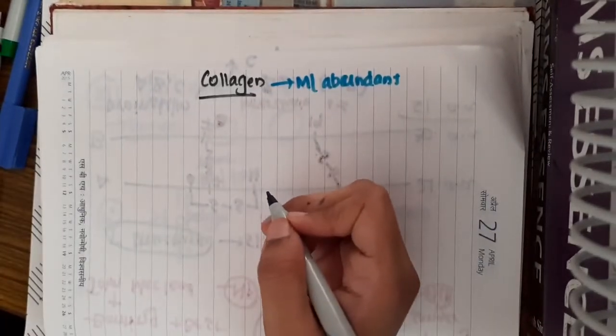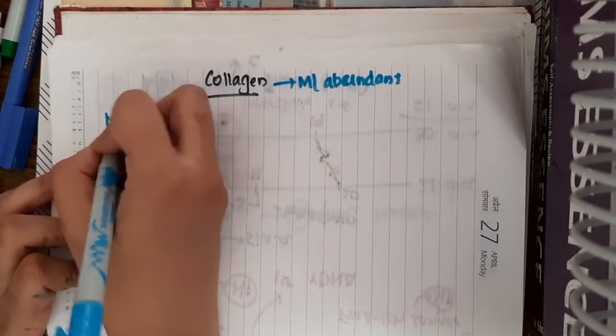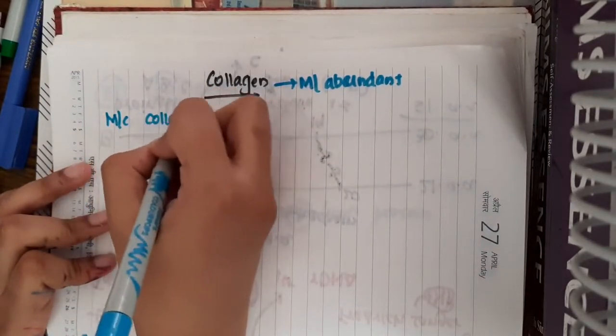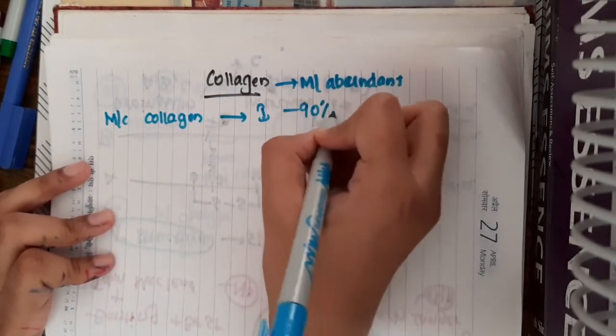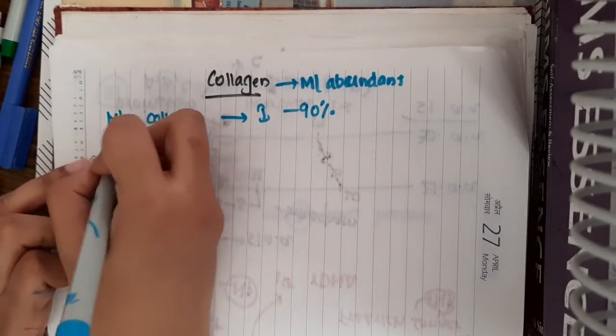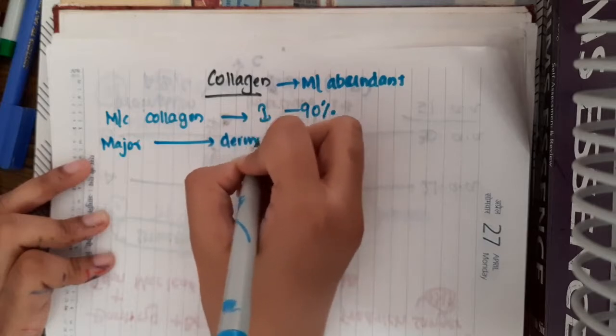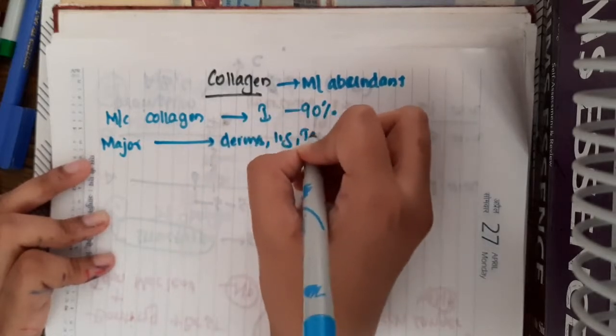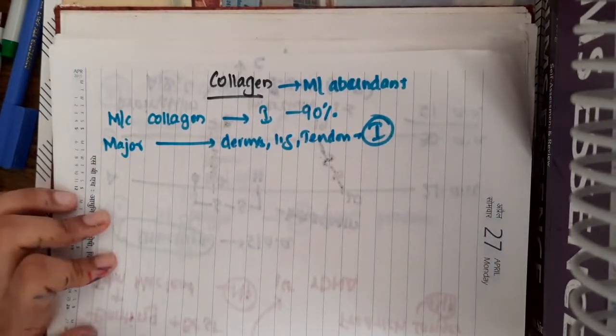There are some one-liners which have been asked in many examinations. The most common collagen present in our body is type 1 collagen which is present in around 90%. Major collagen which is present in dermis, ligaments and tendons is also type 1 collagen.